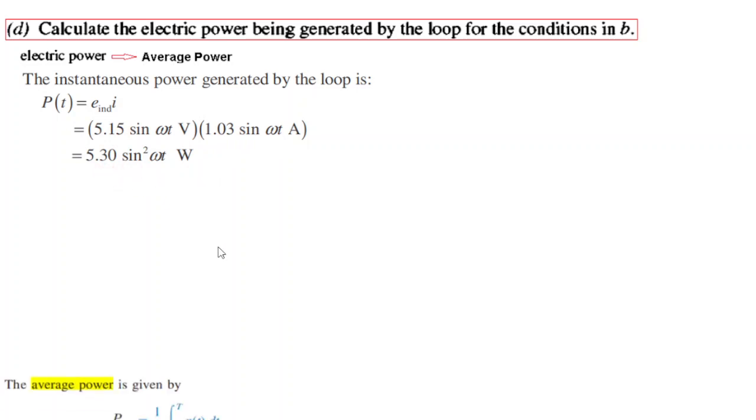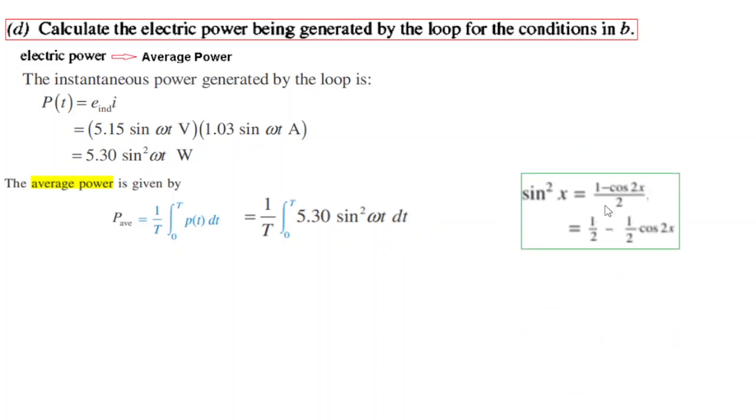Now for average power we know from the circuit that average power is 1 over t integral of the instantaneous power. So we will use this formula. Plugging in the instantaneous power. Now integration of sine square is difficult so we will break it down with the help of the trigonometric formula. And I hope you remember this formula. So we will use this formula.